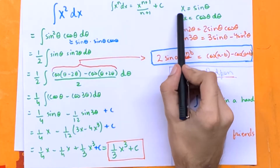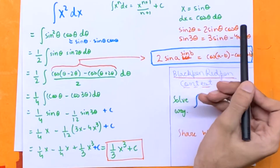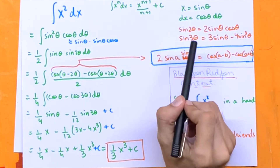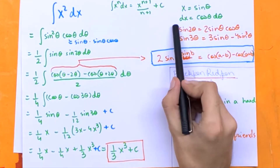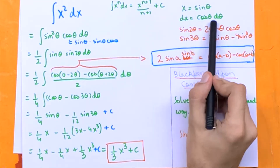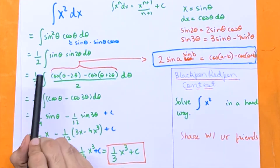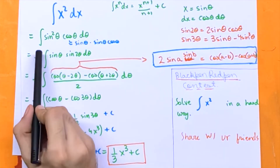Let's take x is equal to sin theta. Differentiating both sides we get dx is equal to cos theta d theta. So we go ahead and substitute that in.